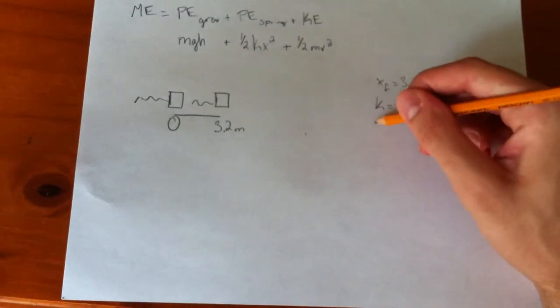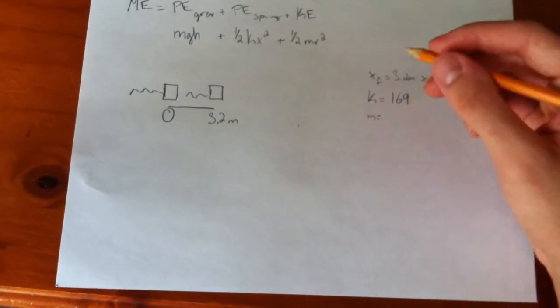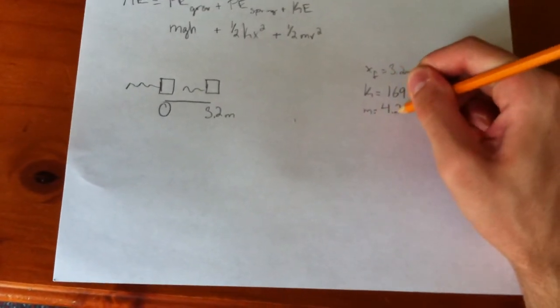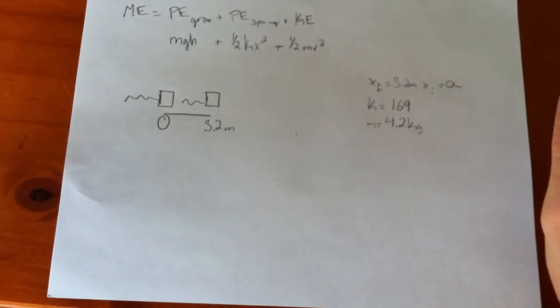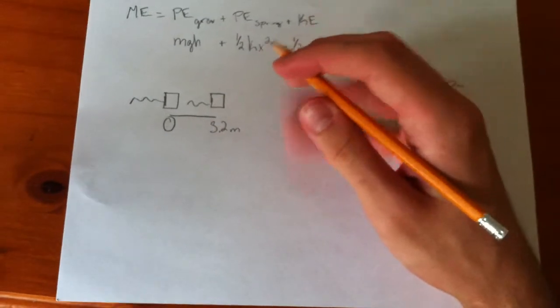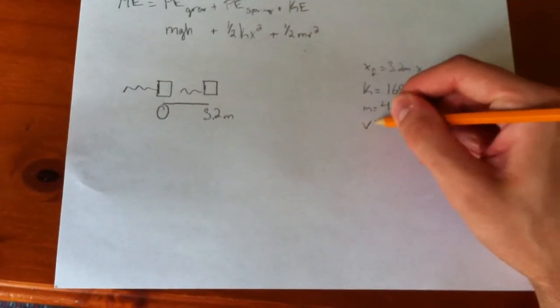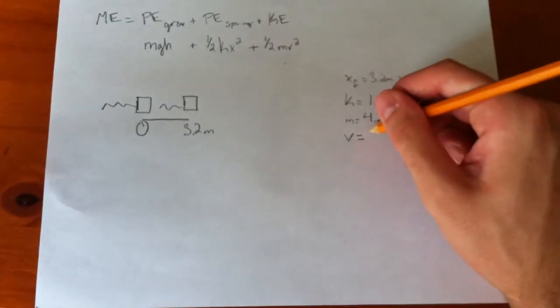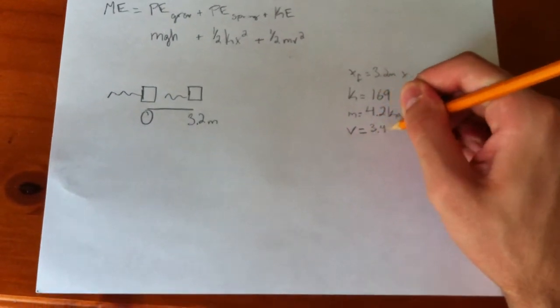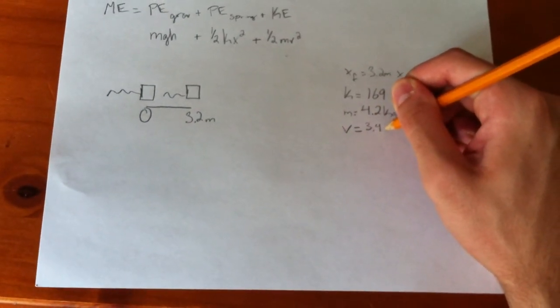The mass of the object, we'll say, is 4.2 kilograms. And the velocity will be, let's say, 3.4 meters per second. Let's make that smaller.